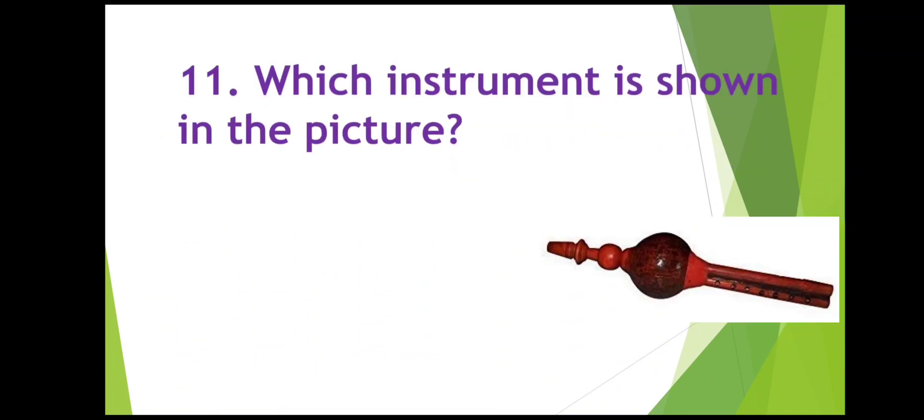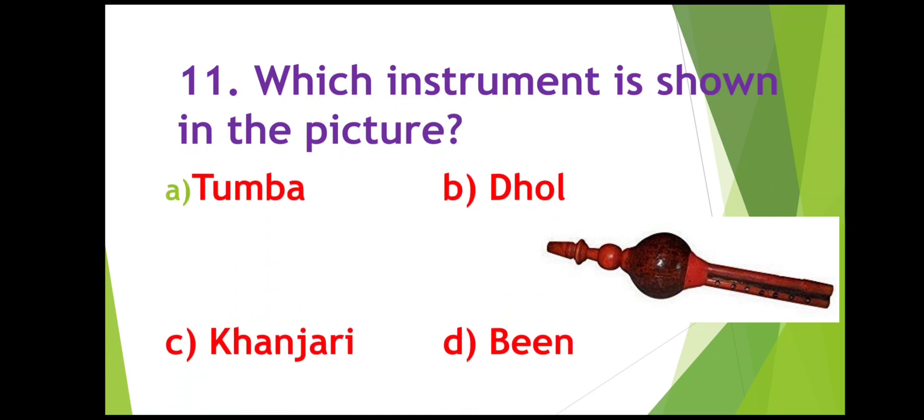Which instrument is shown in the picture? So here you can see there is a picture. You have to guess the instrument. It's tumba, dhol, khanjari, or bean. Yes, you all are correct, it's a bean. I know you have given the correct answer. Move on to the next question.